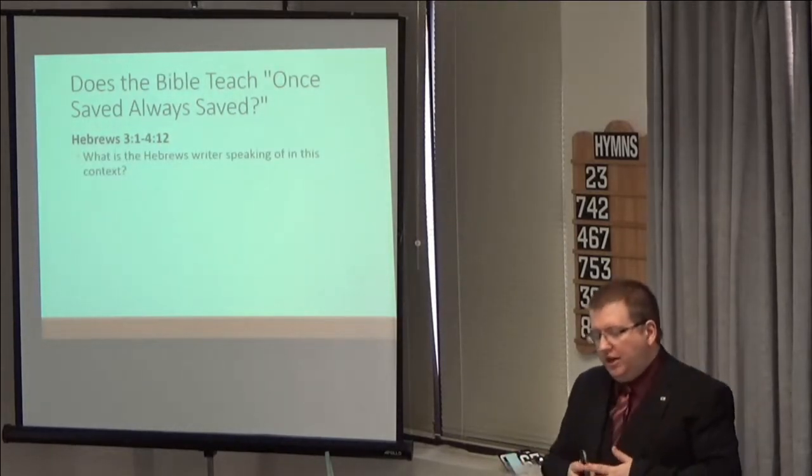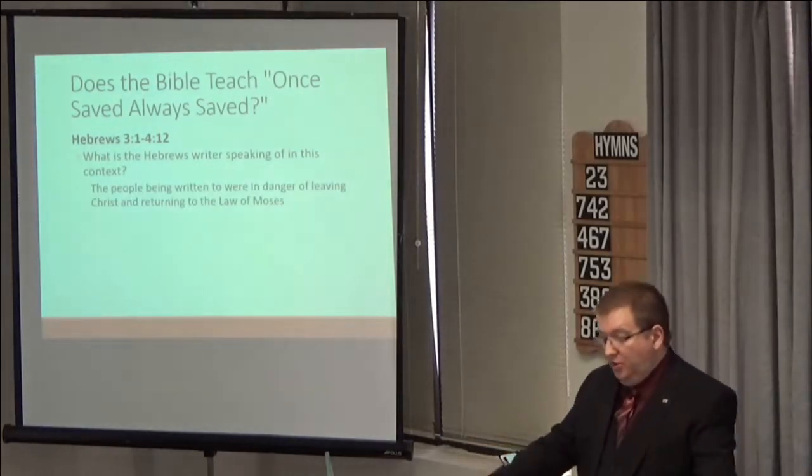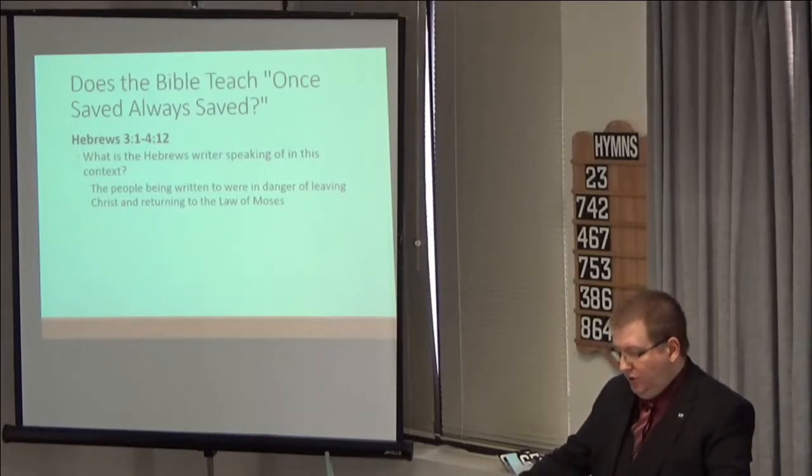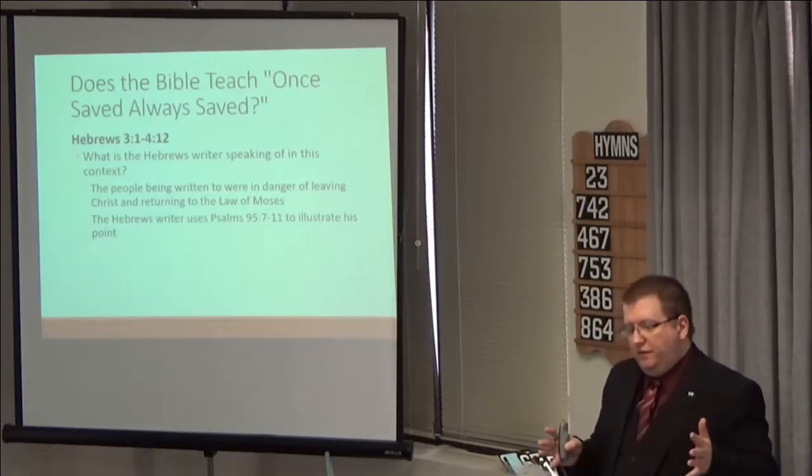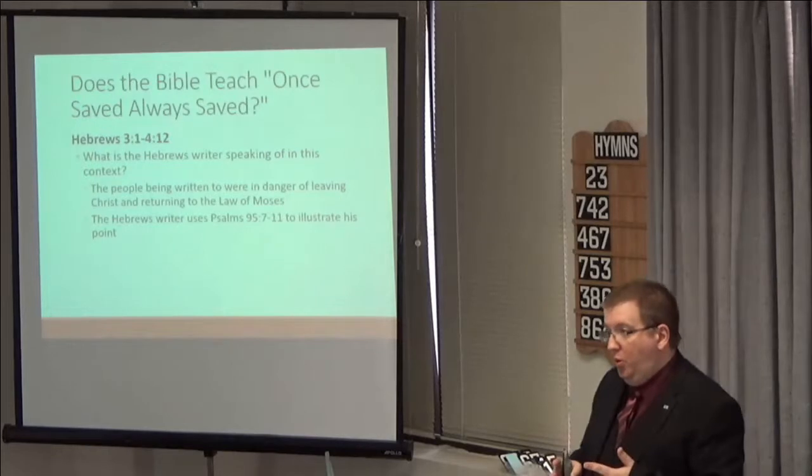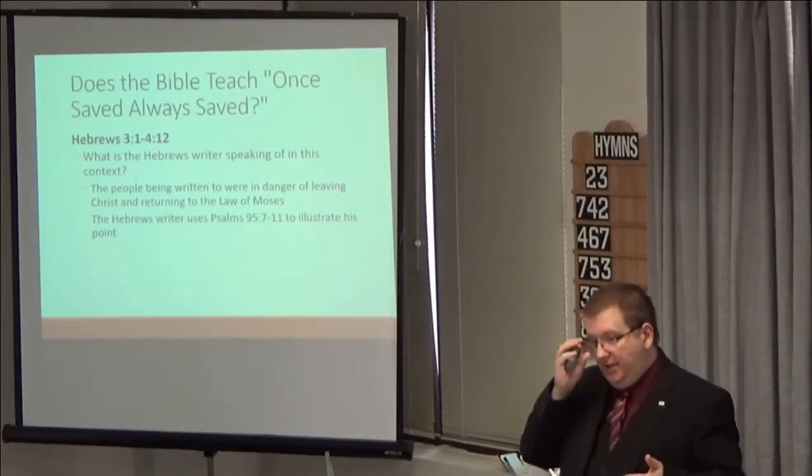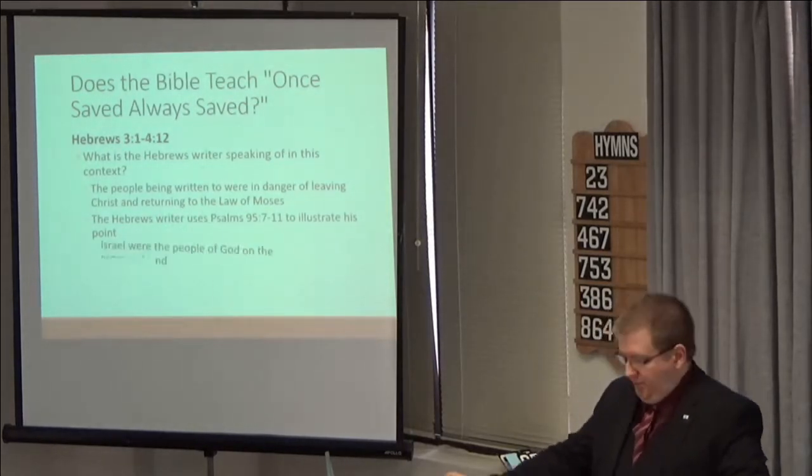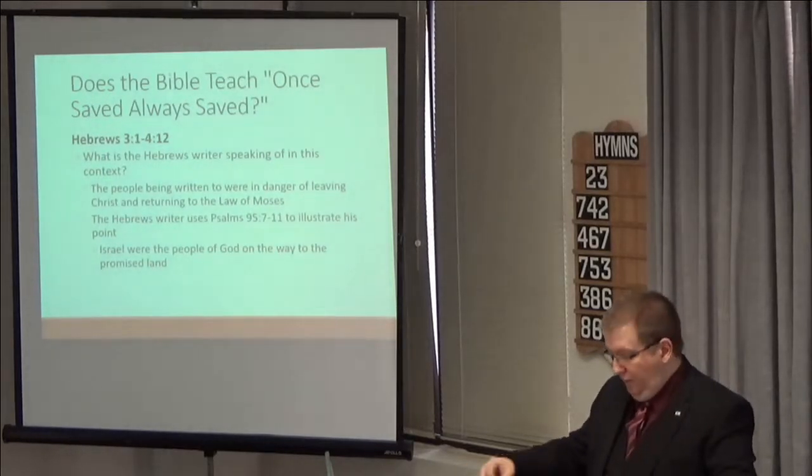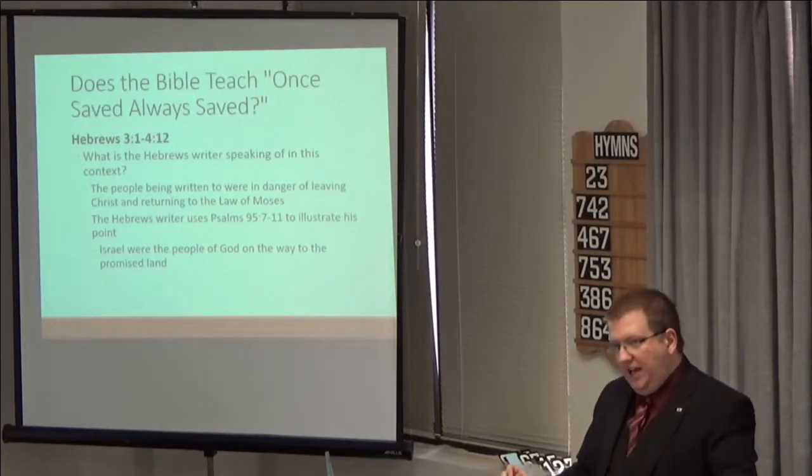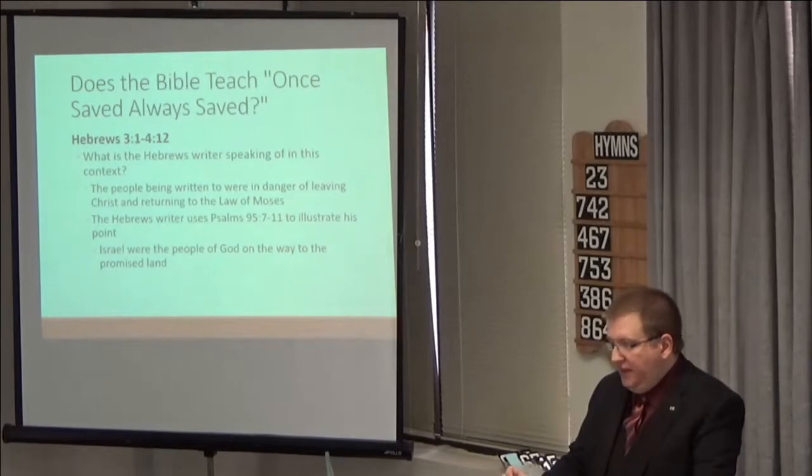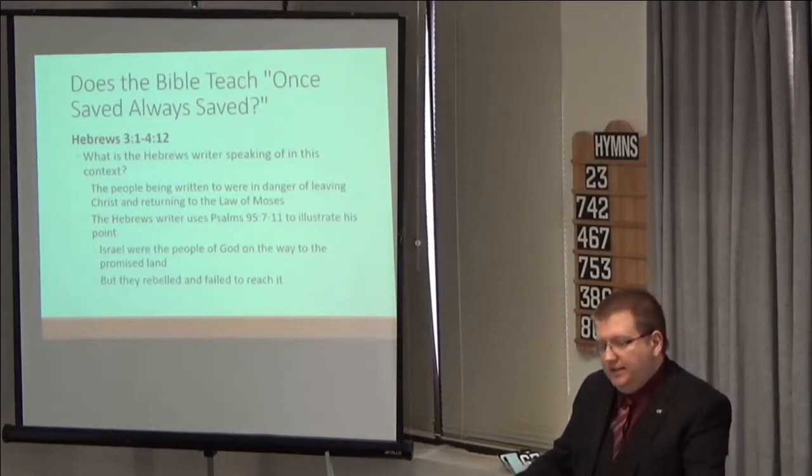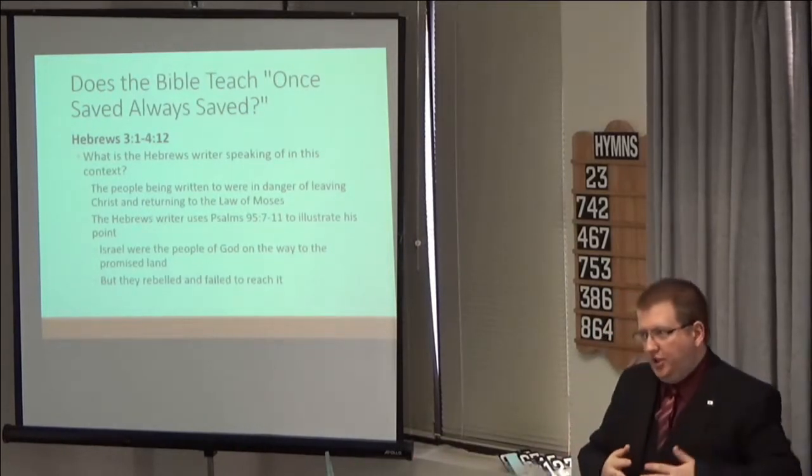Now, what was the Hebrew writer talking about in this context? Well, the people who this letter was written to were being tempted to leave Christ and go back to the law of Moses. A law that could not remit sins. In Hebrews 3 and 4, he uses the Old Testament example of Israel to make his point. He's actually quoting Psalms 95:7-11 in this chapter. Now, the children of Israel were God's chosen people under the Old Covenant, the people through whom God made and kept his promises. In the beginning, the children of Israel followed God as Moses led them out of Egypt. But the people who came out of Egypt, the ones who crossed the Red Sea, failed to reach the promised land, the land of physical rest for their wanderings. Why? Because they rebelled against God. As punishment, they wandered for 40 years in the wilderness until that rebellious generation died off.